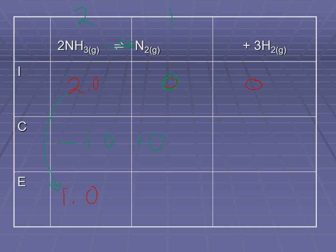This is a 2-to-1 ratio, so if ammonia goes down by 1, nitrogen must be going up by half of that — 0.5 moles per liter. With a 2-to-1-to-3 ratio, hydrogen gas must be going up by 1.5 moles per liter — three times the amount of nitrogen production. Nitrogen starts at 0 and goes up by 0.5, so it ends at 0.5. Hydrogen starts at 0 and goes up by 1.5, so it ends at 1.5. Those are our equilibrium concentrations — put them in a therefore statement with units.